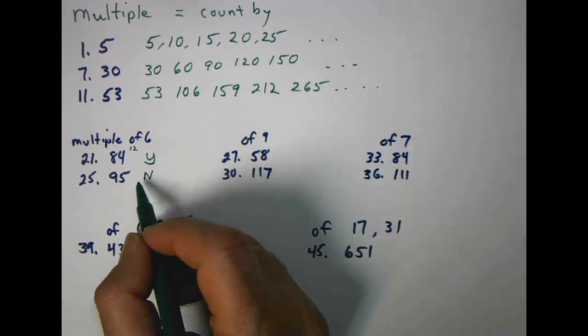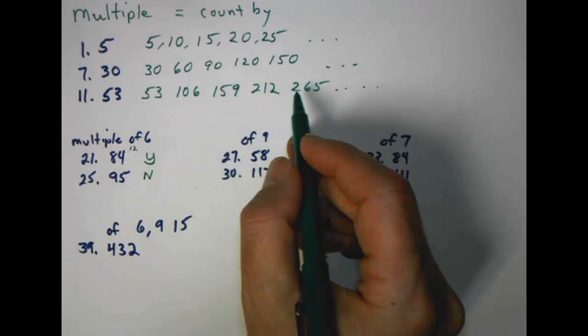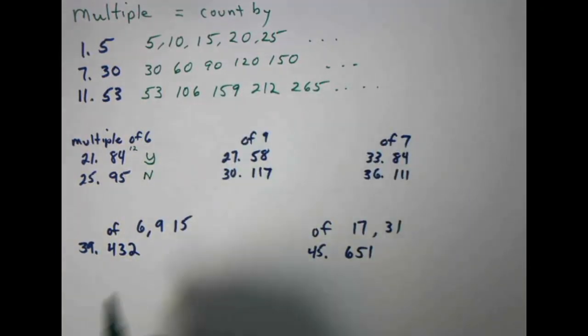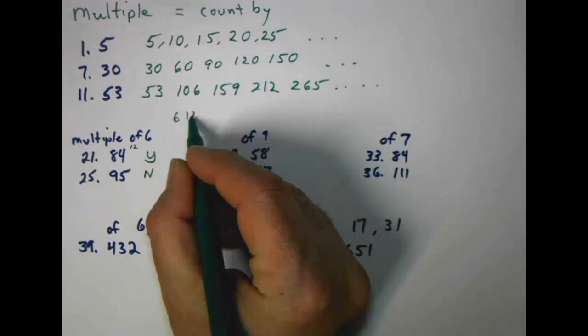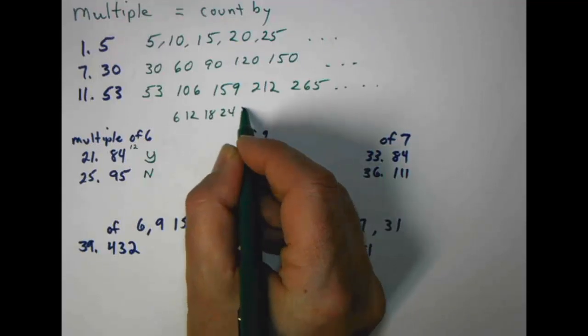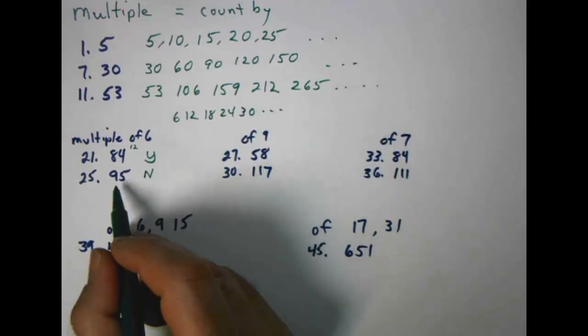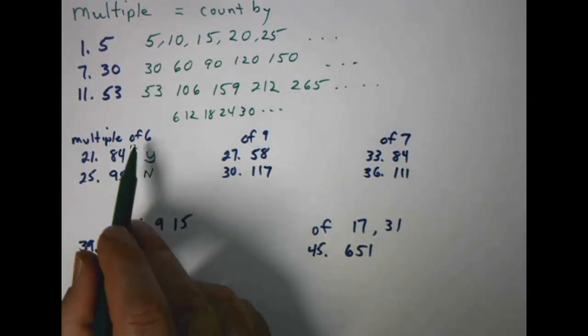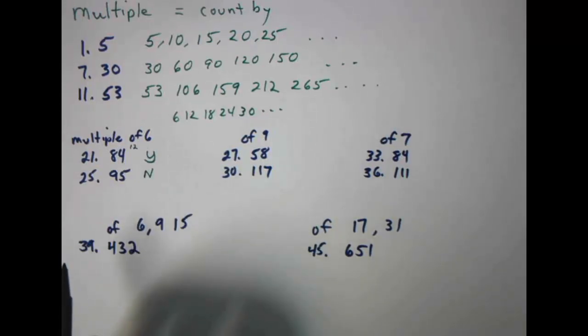In other words, if we count by sixes, ninety-five is not going to be on our list of sixes. We're going to have six, twelve, eighteen, twenty-four, thirty, and so on, but ninety-five is not going to be there because it didn't meet our rules for six.